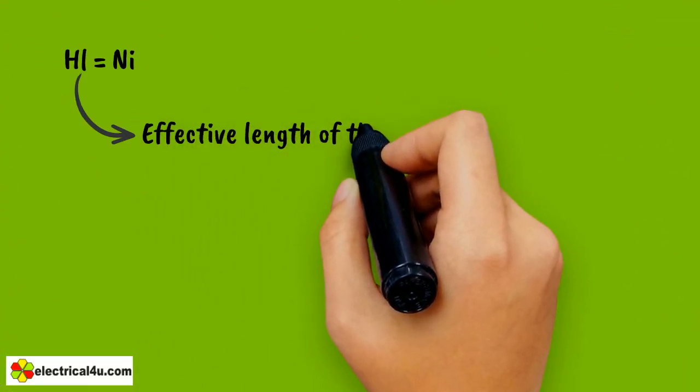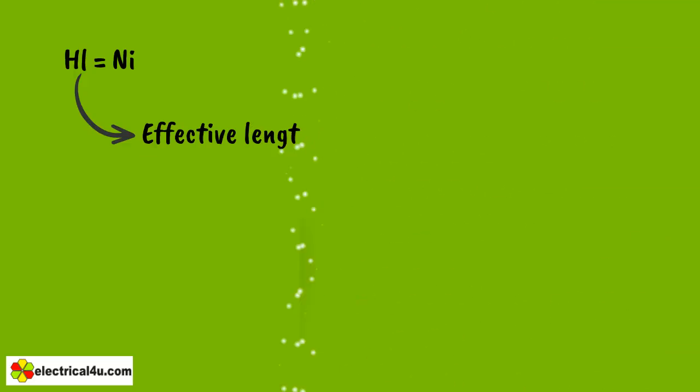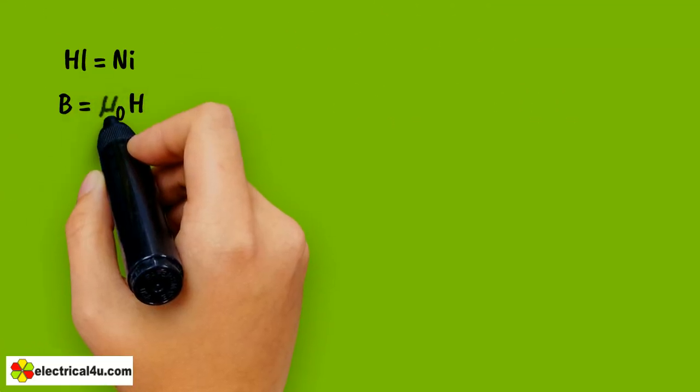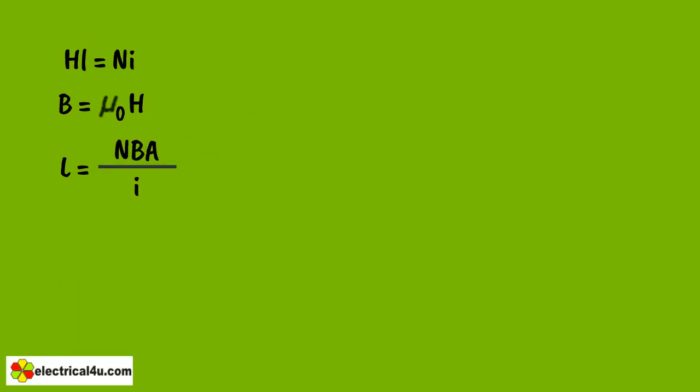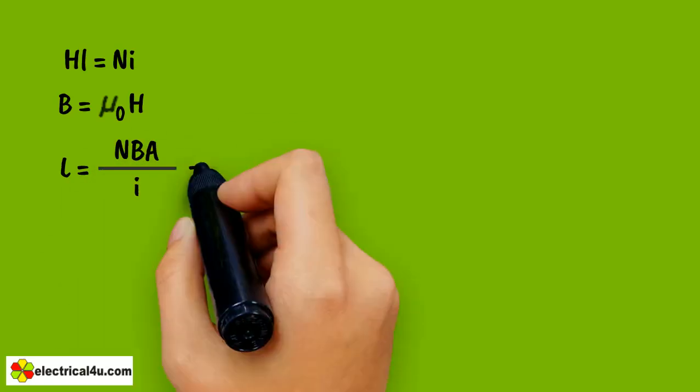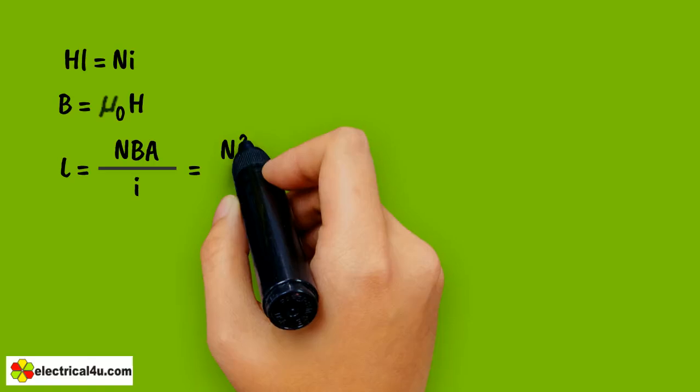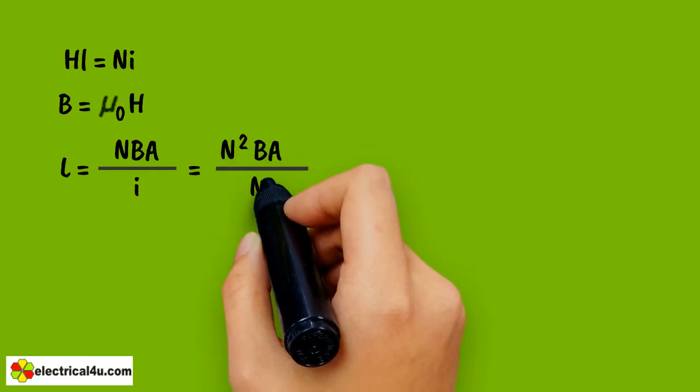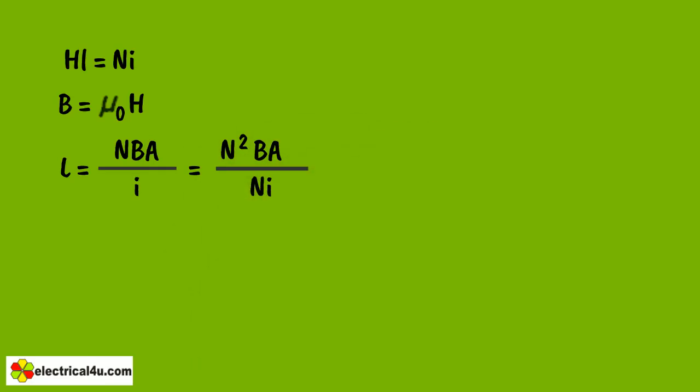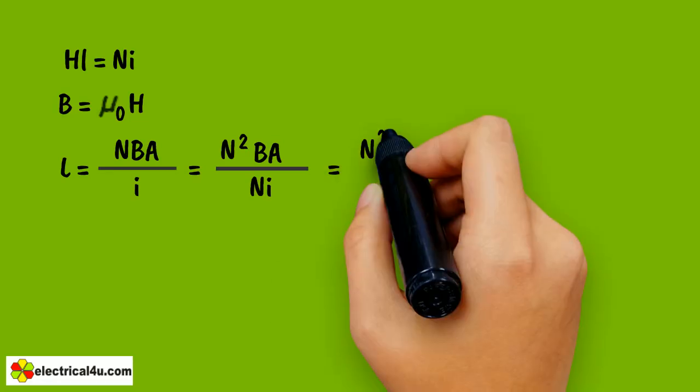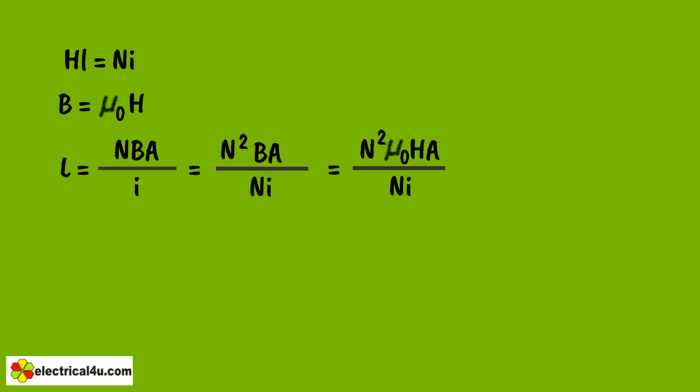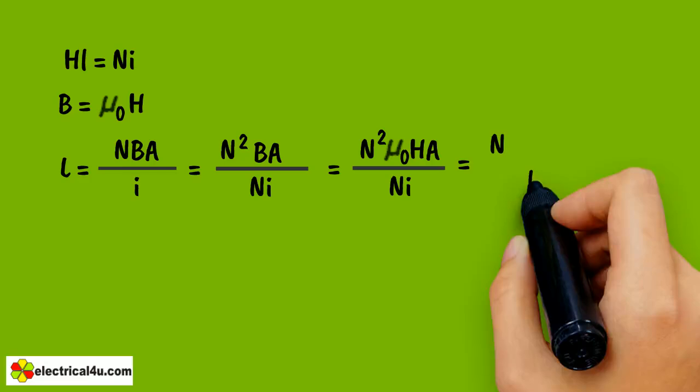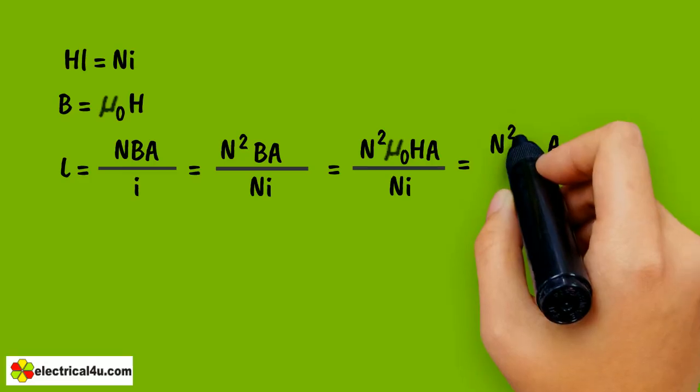L is the effective length of the coil and B equals mu 0 H. So L equals NBA divided by i, that equals N squared BA divided by Ni, which equals N squared mu 0 HA divided by Ni, that is equal to N squared mu 0 A divided by l.